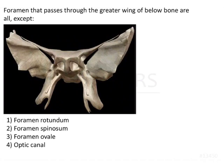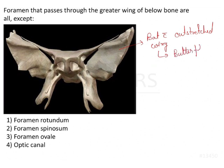The question here is: foramina that pass through the greater wing of the sphenoid bone are all except. Now if we just try to identify this bone, it looks like a bat with outstretched wings, or we can say it looks like a butterfly. So in your exam they generally ask: bat with outstretched wing or butterfly-shaped bone — that is going to be your sphenoid bone.